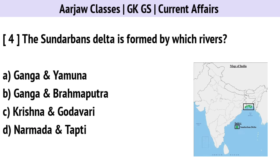The Sundarbans Delta is formed by which rivers? Correct option is B — Ganga and Brahmaputra River.